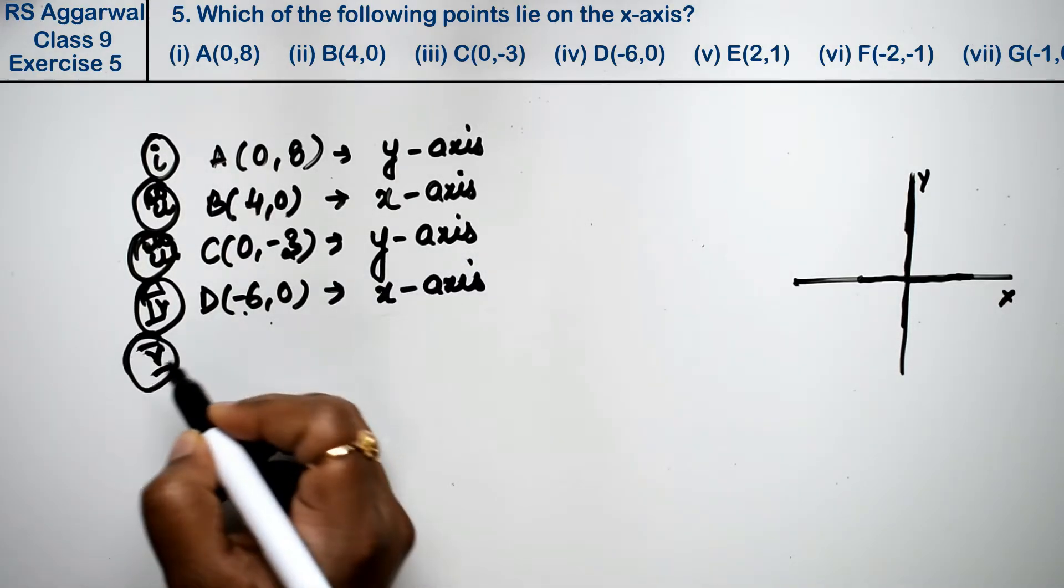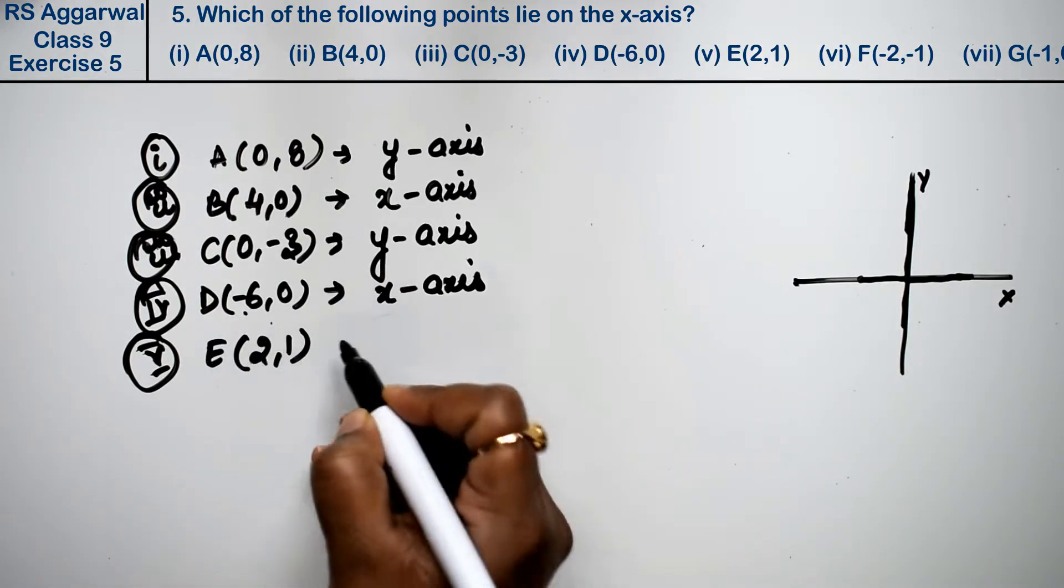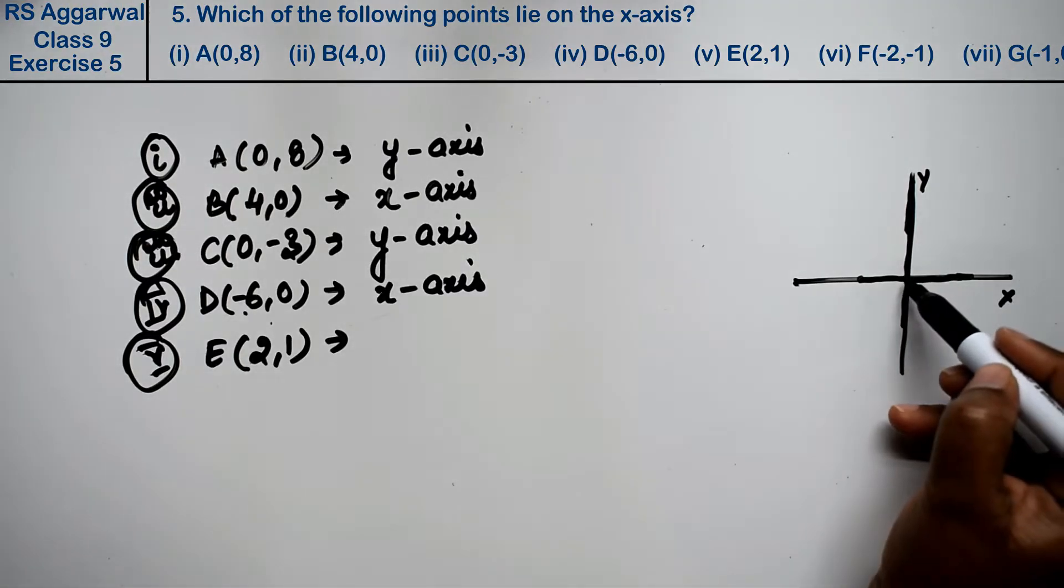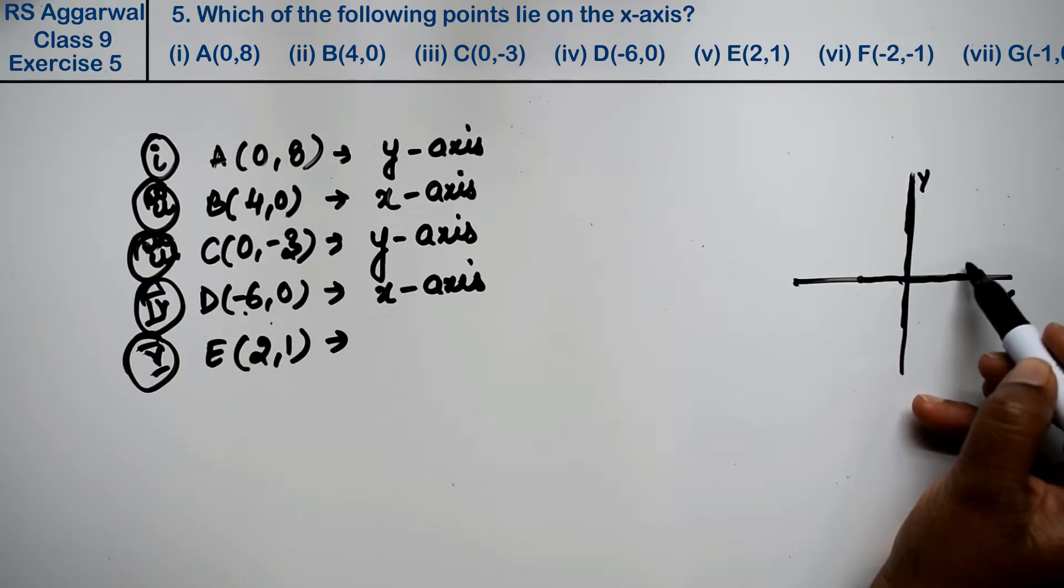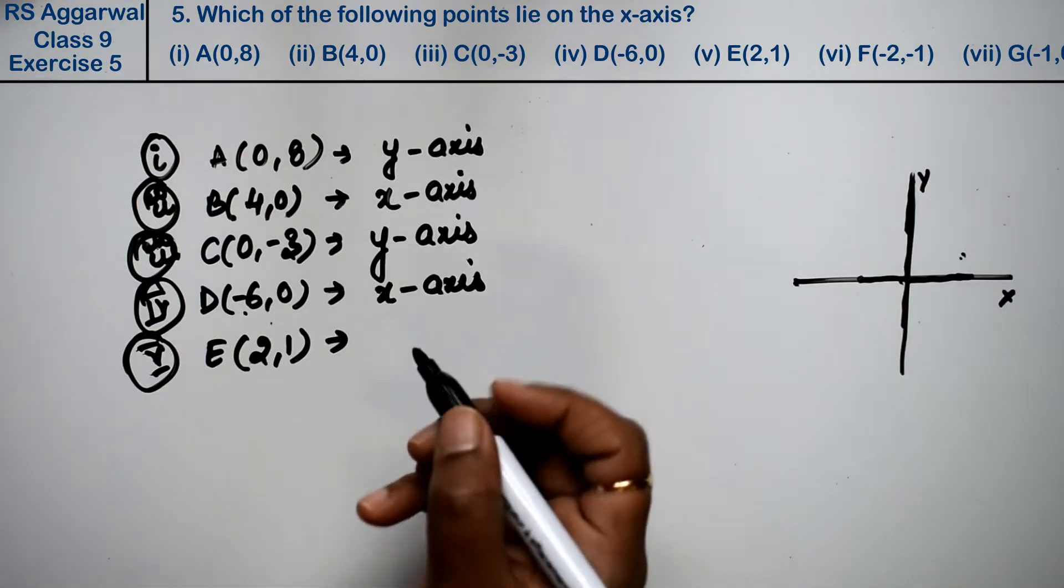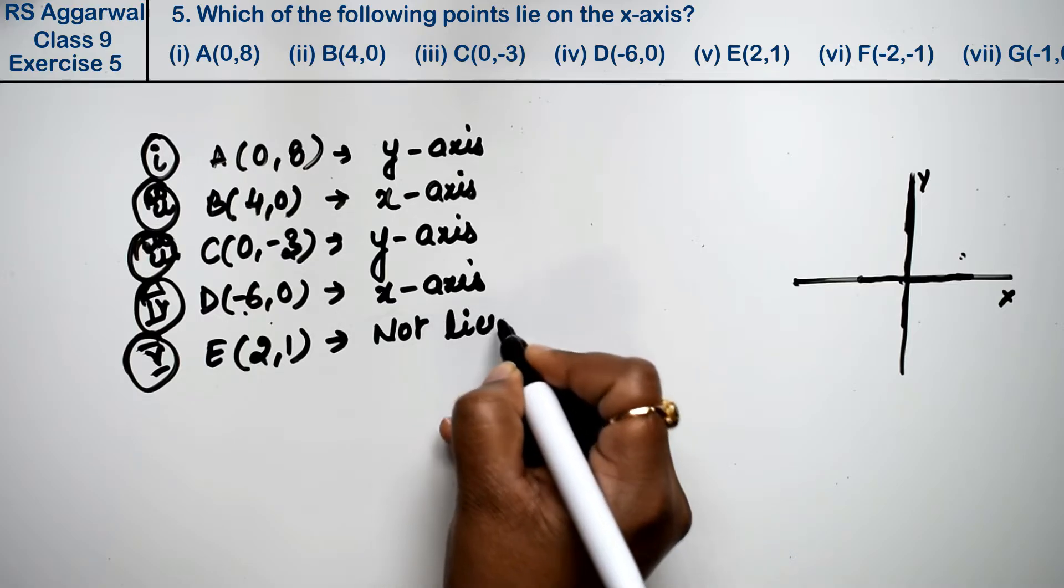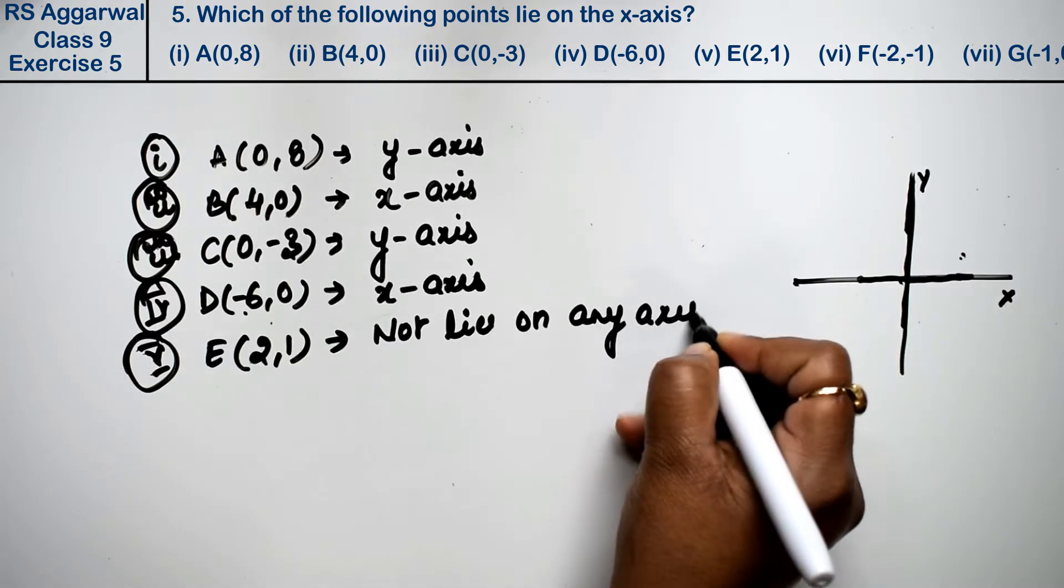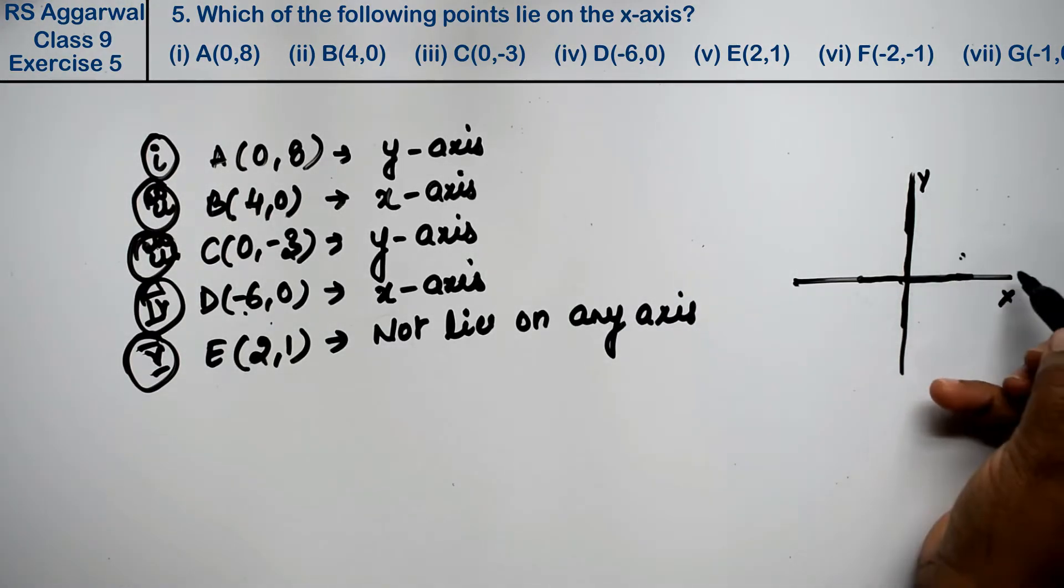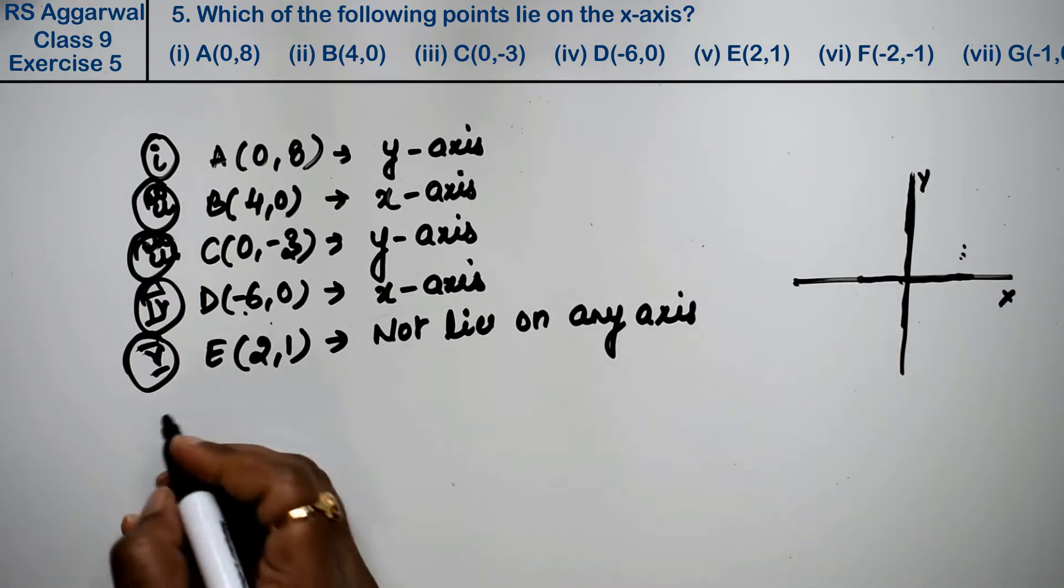Let's do fifth part. Fifth part is E(2,1). So x is 2 and y is 1. Neither x nor y is 0, so it does not lie on any axis.